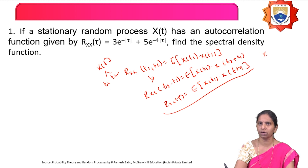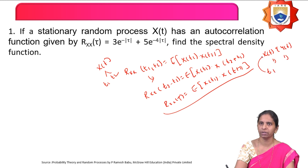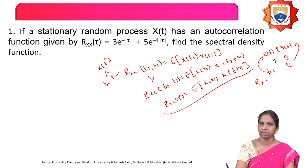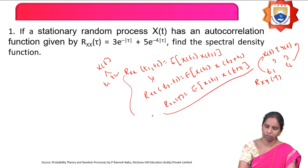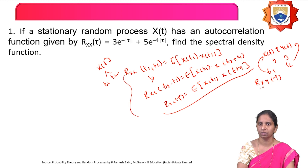Similarly, you can define cross-correlation. Cross-correlation means you consider two random processes. On these two random processes, you define one random variable from each process, and the measure of similarity between those two random variables defined on the two random processes is nothing but cross-correlation.